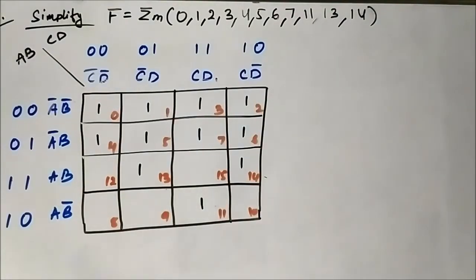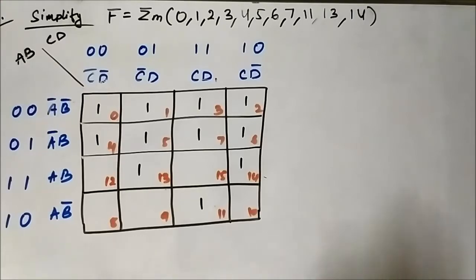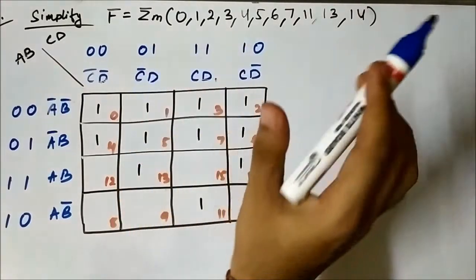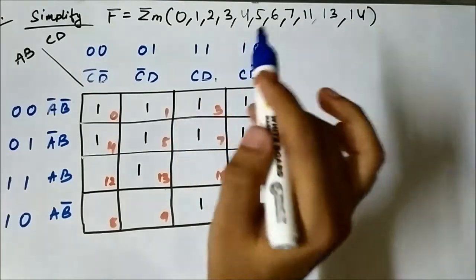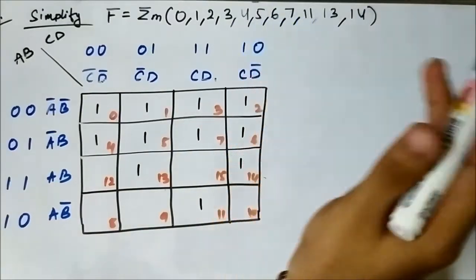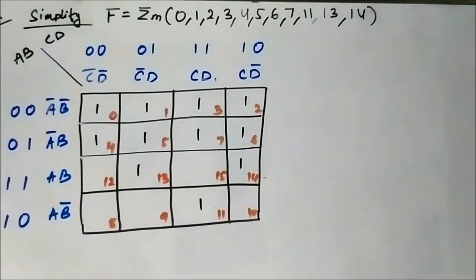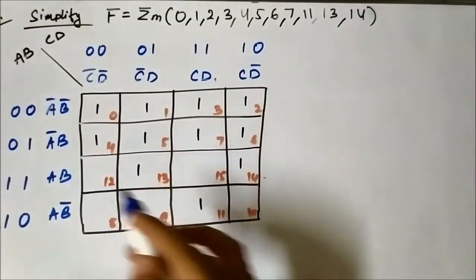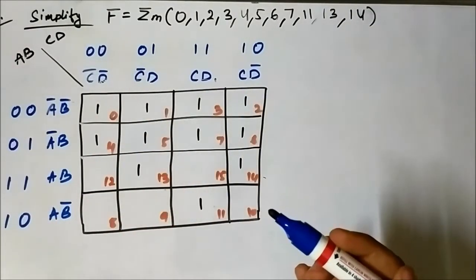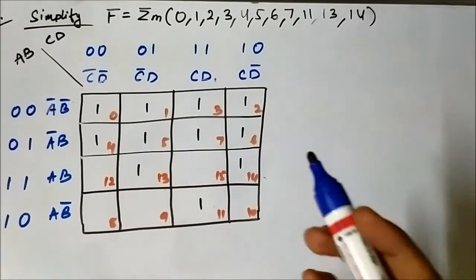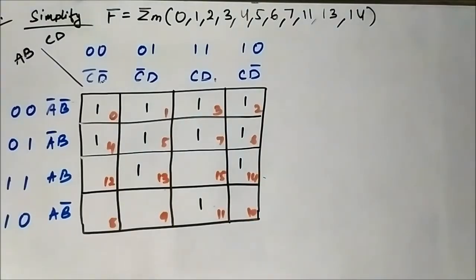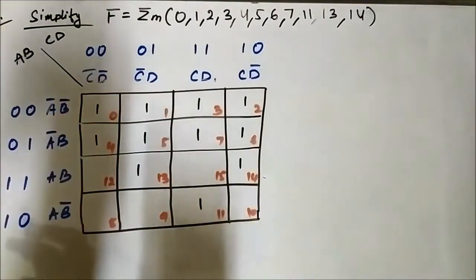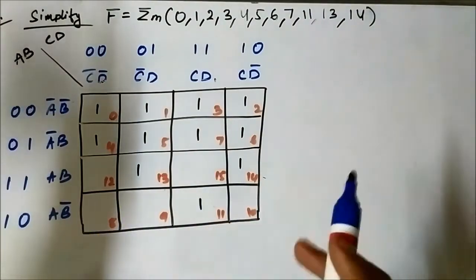We have marked the respective cells. Now we have to form groups. As per the rules of group formation, a group can accommodate 1, 2, 4, 8, or 16 (power of n) cells. Adjacent cells should be grouped, the maximum number of adjacent cells should be accommodated, the minimum number of groups should be formed, and no marked cells should be left behind.